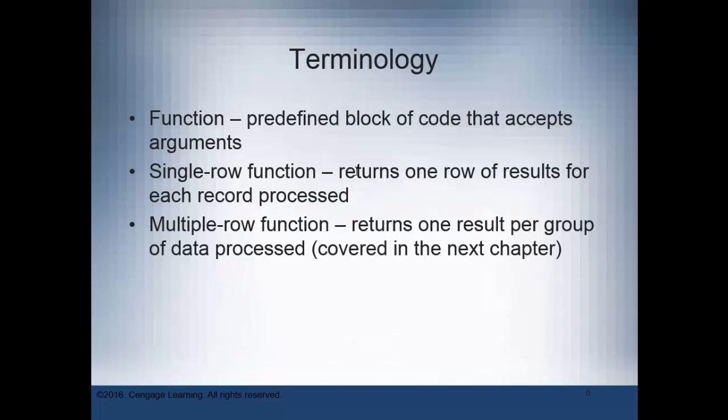In chapter 10 we're going to talk about single row functions, which look at one row of data and return one row of results. If it looks at two rows of data, it returns two results. It returns one result for each record processed.